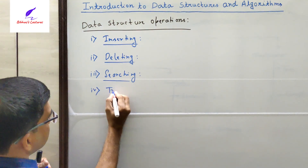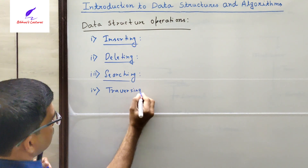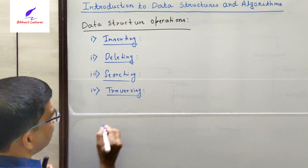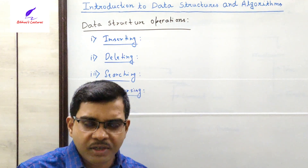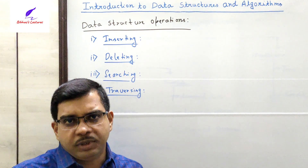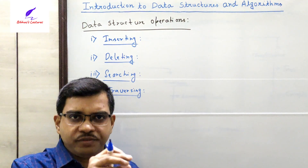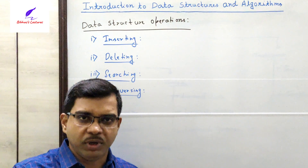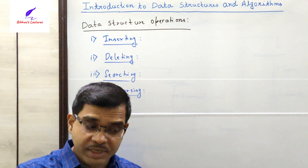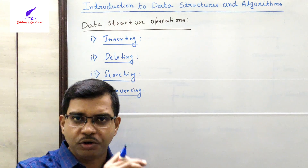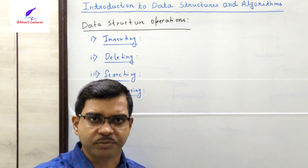Number four is traversing — traversing is sometimes also called visiting. It means to visit each and every node, each and every element, exactly once. There will be no duplicate visit; each and every element and every record will be visited exactly once. This process is called the traversing process.